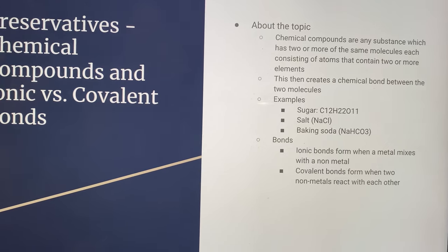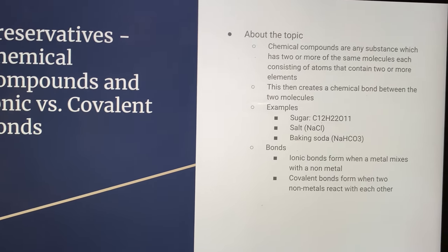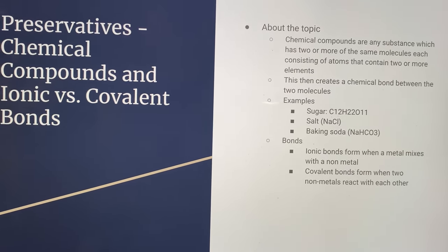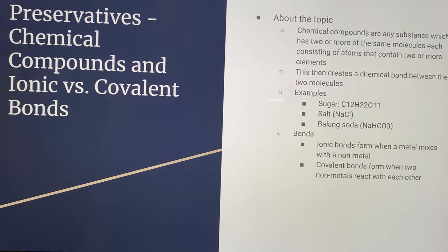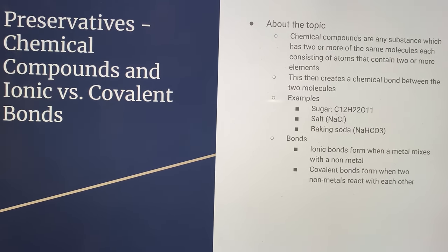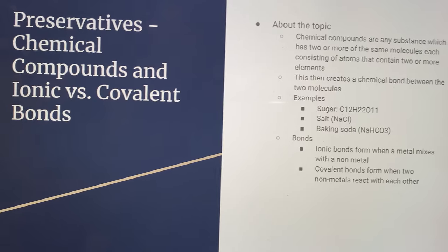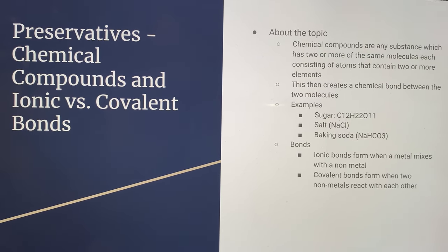Now, bonds. Ionic bonds are formed when a metal mixes with a non-metal, and covalent bonds are formed when two non-metals react with each other.